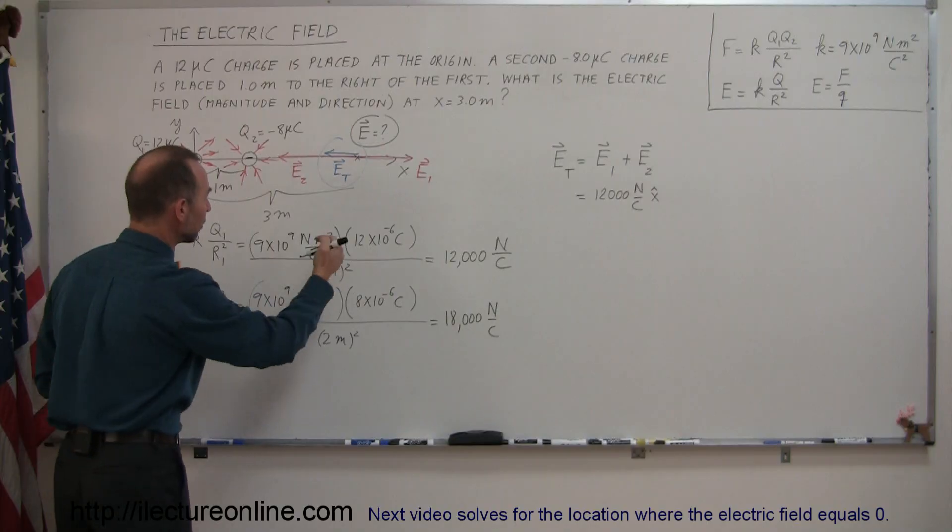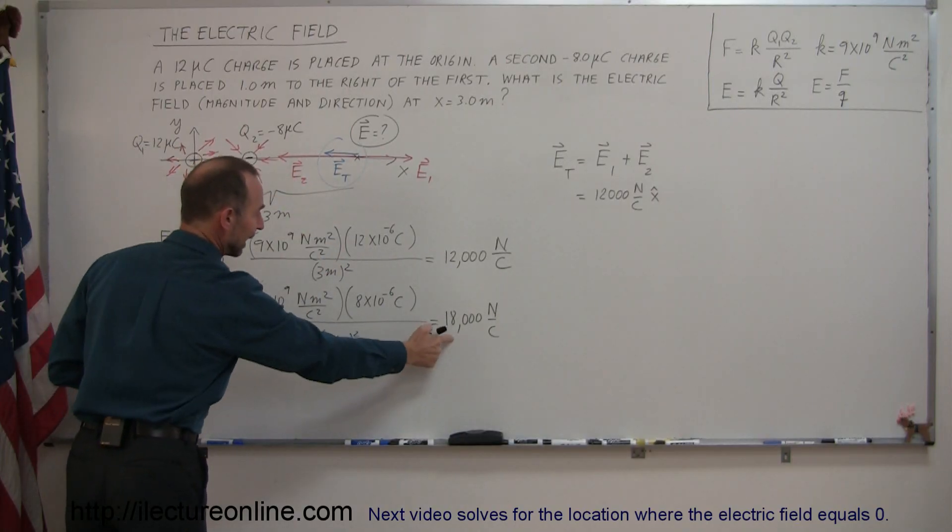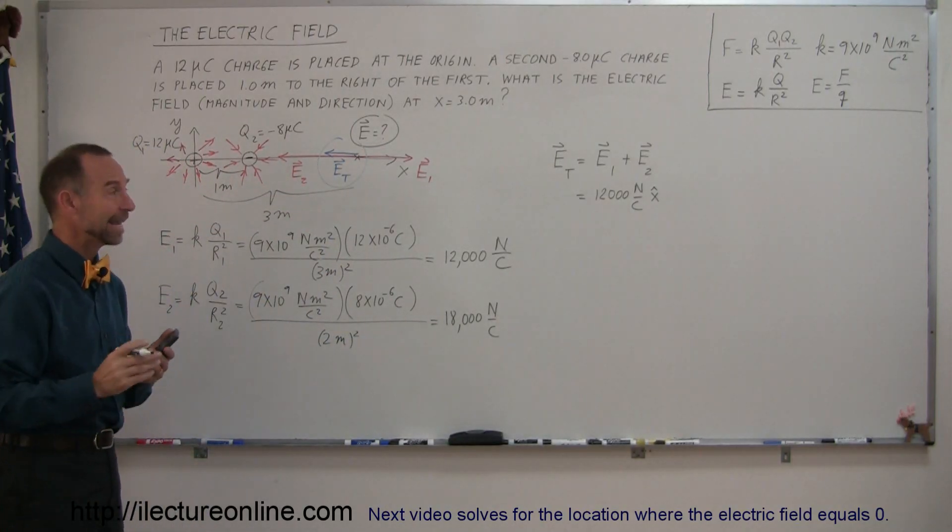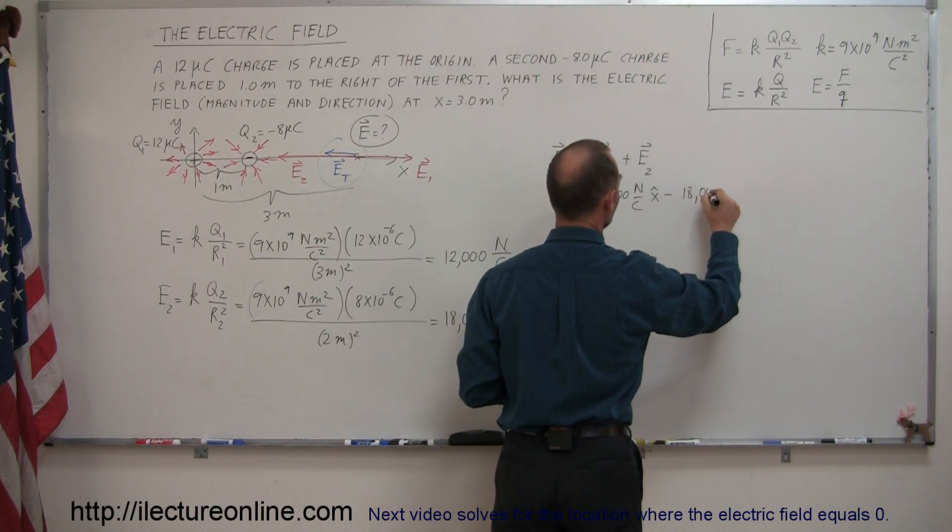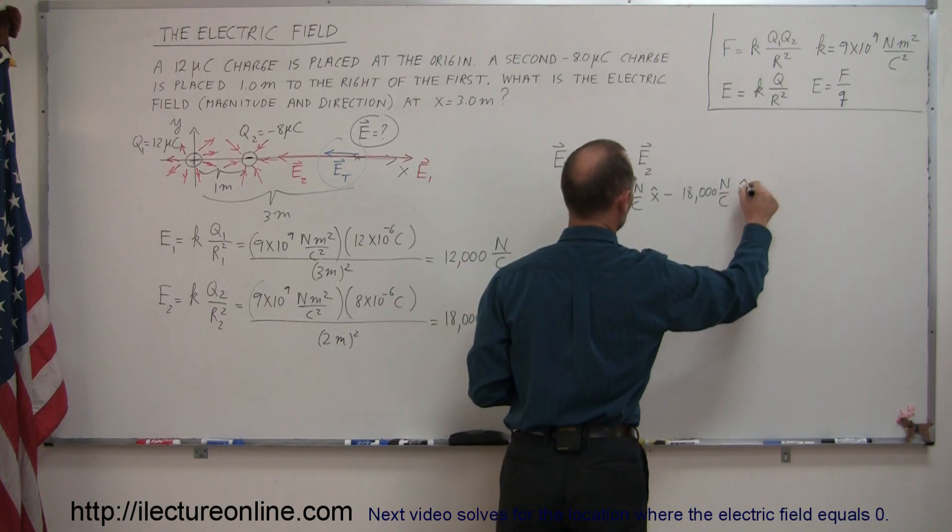We add to that E2. Now E2 is pointing to the left, 18,000 newtons per coulomb, so that's a negative 18,000 newtons per coulomb in the x direction.